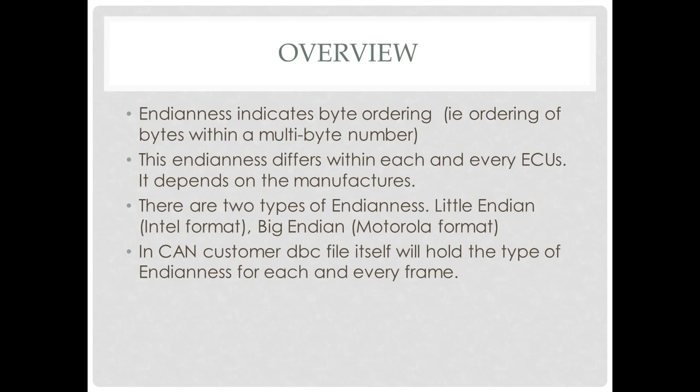There are two types of Endianness: we call them Little Endian and Big Endian. Little Endian is also called Intel format, and Big Endian is also called Motorola format. Even for a controller, we can determine whether it is Intel format or Motorola format by reading its controller datasheet.